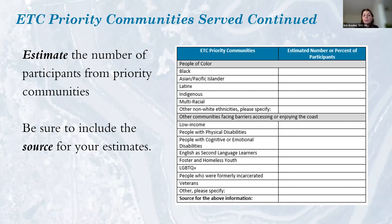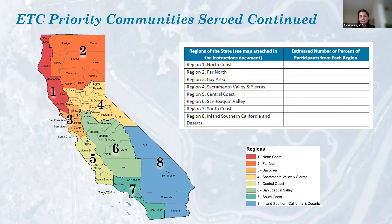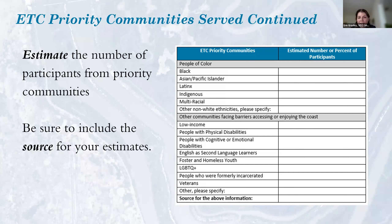In the top part of the table, estimate the number of participants you expect to serve from ETC priority communities. Please include the source for your estimates — such as school district free and reduced lunch statistics, or your organization's internal surveys. Examples of completed tables can be found on the RFP site or linked in the application instructions. Shalini will drop the link in the chat.